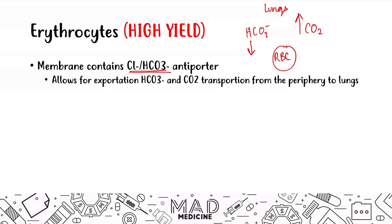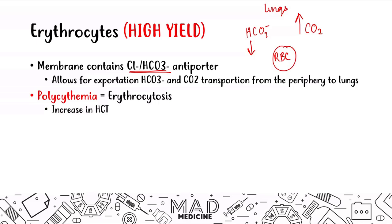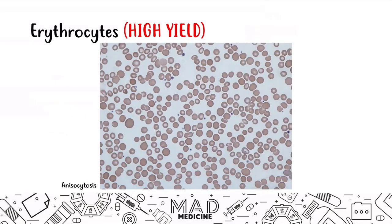There are certain states of red blood cell production you need to be well aware of. The first is polycythemia, also known as erythrocytosis — this means you have an increase in hematocrit, meaning you are producing a lot of red blood cells. You can also have anisocytosis, which means you have abnormal sizes of red blood cells. As you can see in this image, there's a really large red blood cell and really small red blood cells — they're not uniform and don't all have the typical central pallor. This is what anisocytosis looks like.